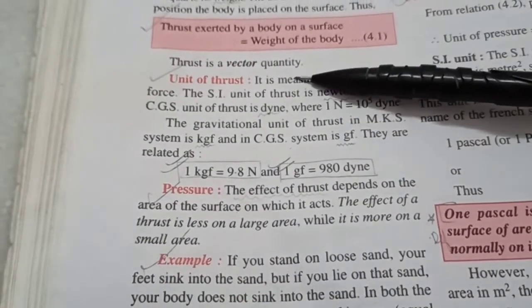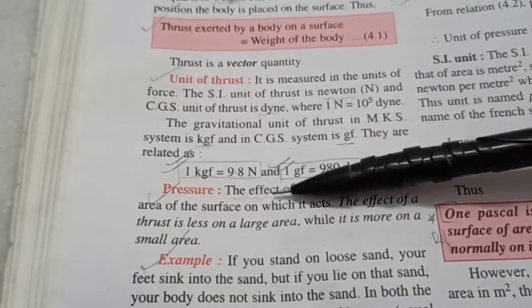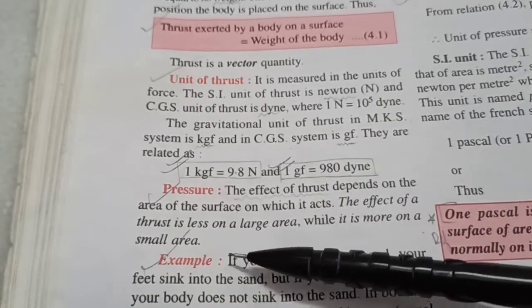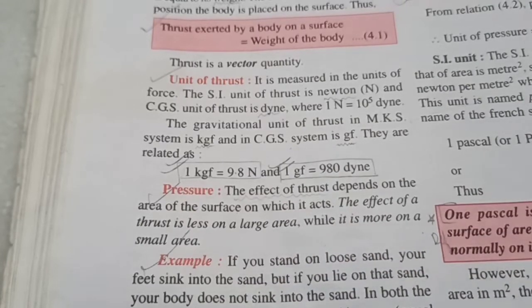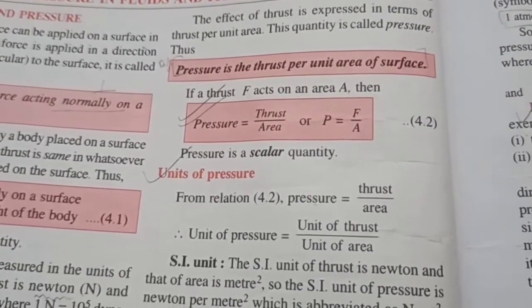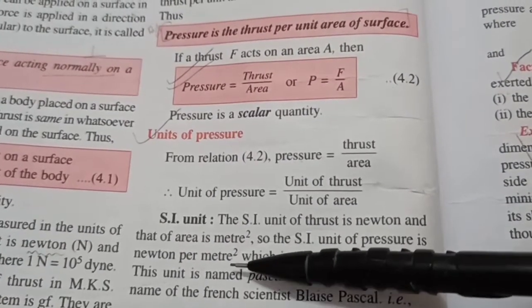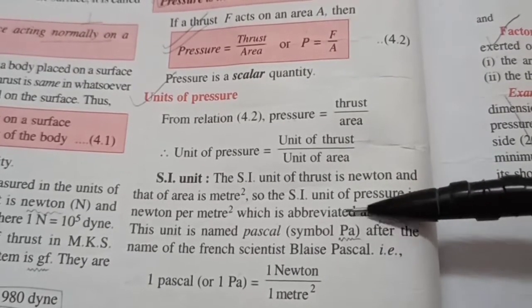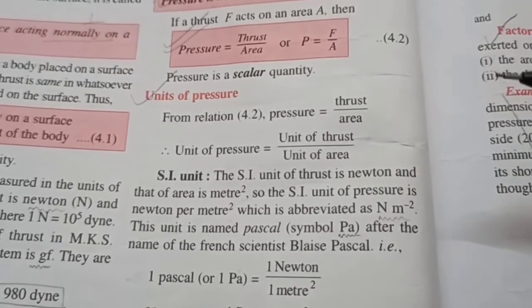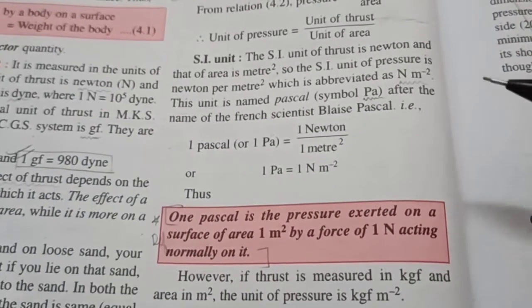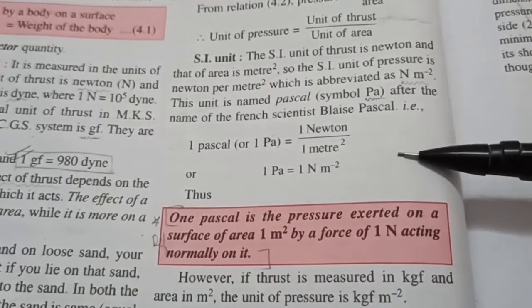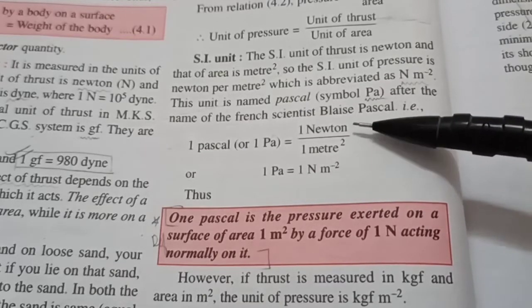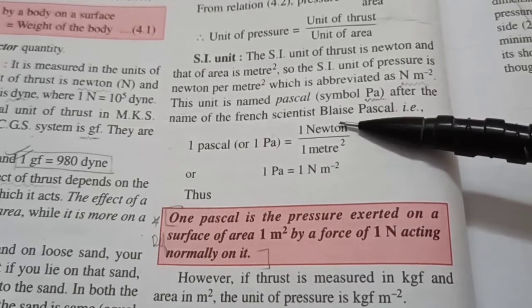Thrust is a vector quantity. It's force after all. Its SI unit is Newton. Pressure is defined as thrust per unit area. And its SI unit is Newton per meter square, which is also called Pascal. Remember, p is small here, lowercase. The symbol is capital P, small a. So 1 Pascal can be defined as the pressure exerted on 1 meter square area when the force is 1 Newton, normally. That is, the thrust is 1 Newton.